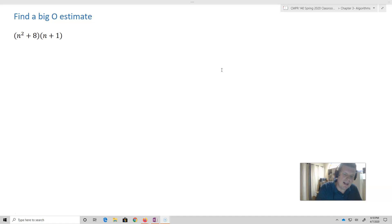And so what I've got here is (n² + 8)(n + 1). And so this is going to end up being n³ + 8n + n² + 8, which is just going to be n³ + n² + 8n + 8.